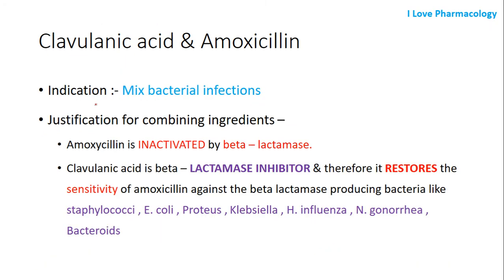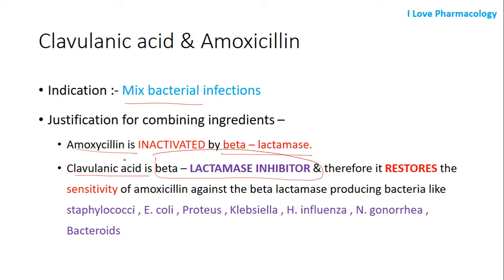Coming to the indications of clavulanic acid and amoxicillin, they are useful in the treatment of mixed bacterial infections. The rationale for combining these two ingredients: amoxicillin is inactivated by beta-lactamase, whereas clavulanic acid is a beta-lactamase inhibitor, thereby enhancing the activity of amoxicillin and restoring its sensitivity against beta-lactamase-producing bacteria.